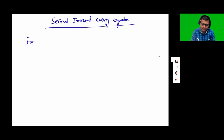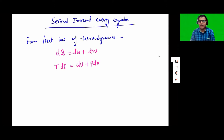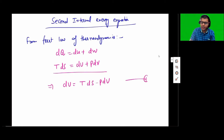From the first law of thermodynamics, we know that dQ is equal to dU plus dW, where dW is pdV and dQ is TdS using the second law of thermodynamics, where S is the entropy, U is the internal energy, V is the volume, P is the pressure, and W is the work. So if we combine the first and second laws of thermodynamics, we get this particular equation. Now, if I write dU from this equation, I get TdS minus pdV — let me number it as equation 1.